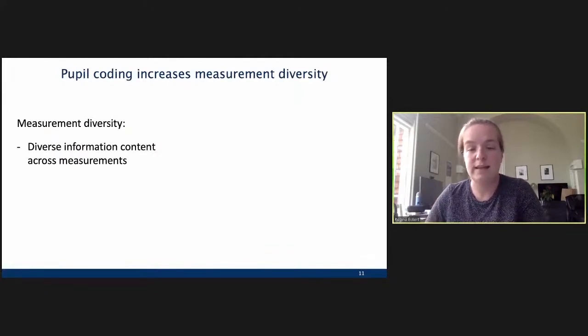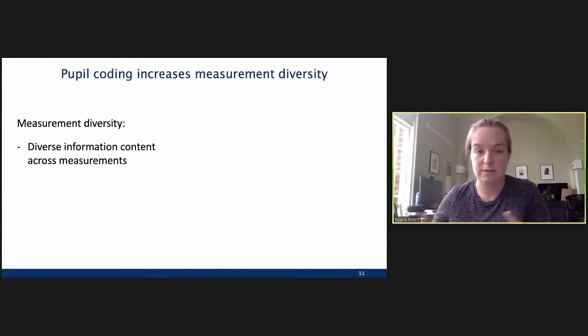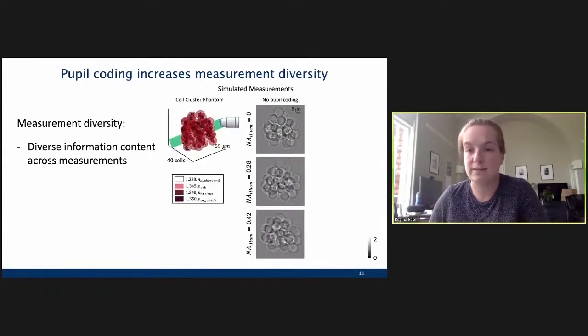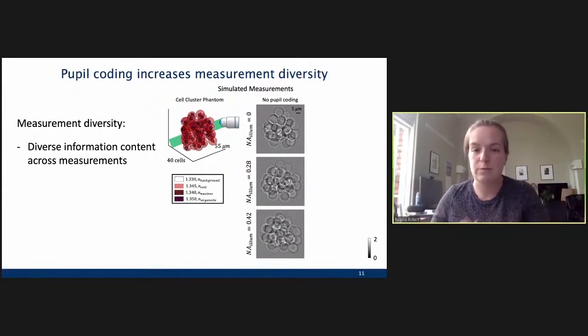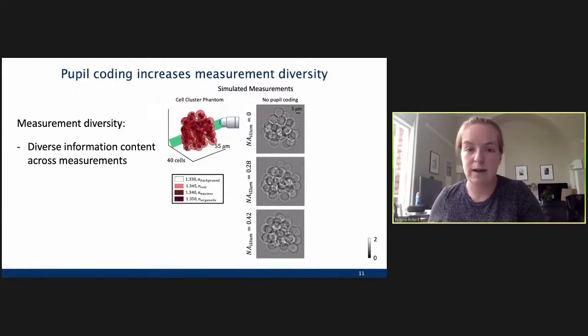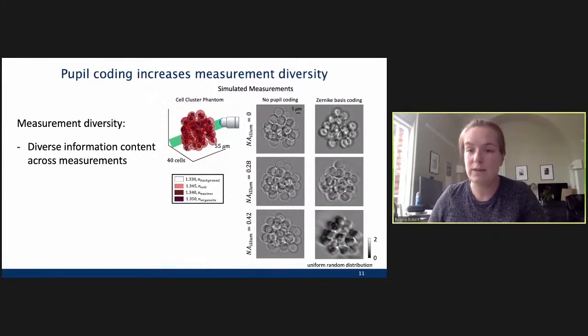Now, actually, I've seen through this work that all of these different bases work fairly well and fairly similar to each other. So, I'm just going to be talking about the Zernike basis here to make some of the next slides a little bit easier to look at. All right. So, what I've seen in this work is that including this pupil coding in the system increases our measurement diversity. And so, here I'm defining measurement diversity to be having more diverse information content collected across my measurements. So, we can see this by looking at some simulated measurements. So, here I have this cell cluster phantom that we were looking at before. And I'm looking at the no pupil coding case here. So, the original diffraction tomography case where we're just changing the angle of illumination. And down the column, we're going to have a different angle of illumination for each measurement. So, you can see that there's some information here. Some of the cells that are out of focus are kind of moving around as the angle scans. But generally, these don't look that different by eye.